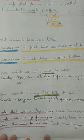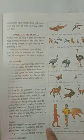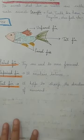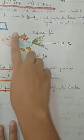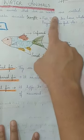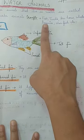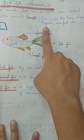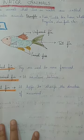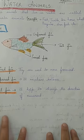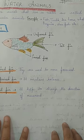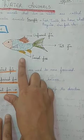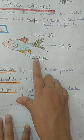Now coming to the next topic — water animals. As the name indicates, water animals are animals that live in water. For example, fish, turtle, seahorse, whale, penguins, and starfish. We will talk about how some water animals move. Here is the diagram of a fish. Fish have two or three kinds of fins.